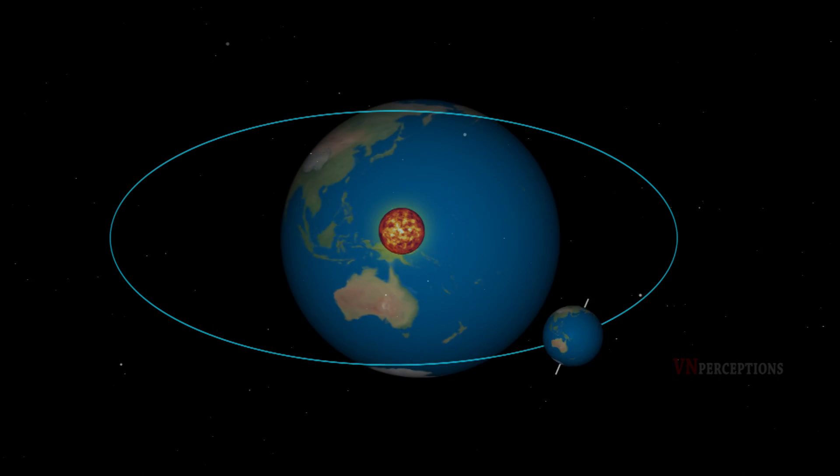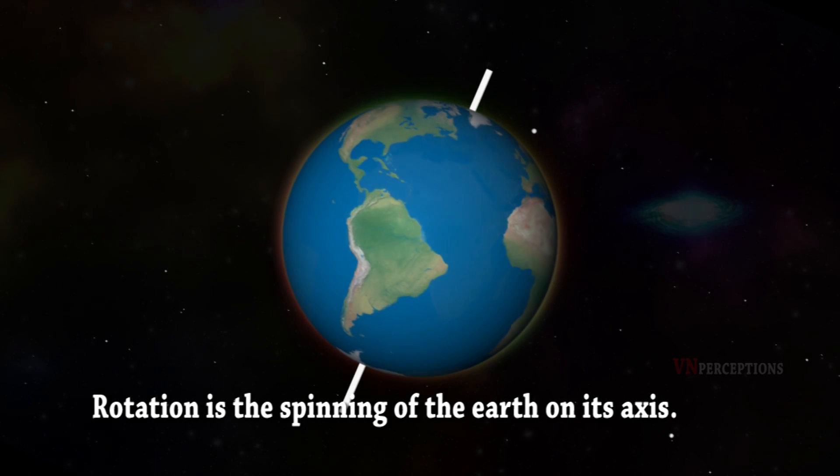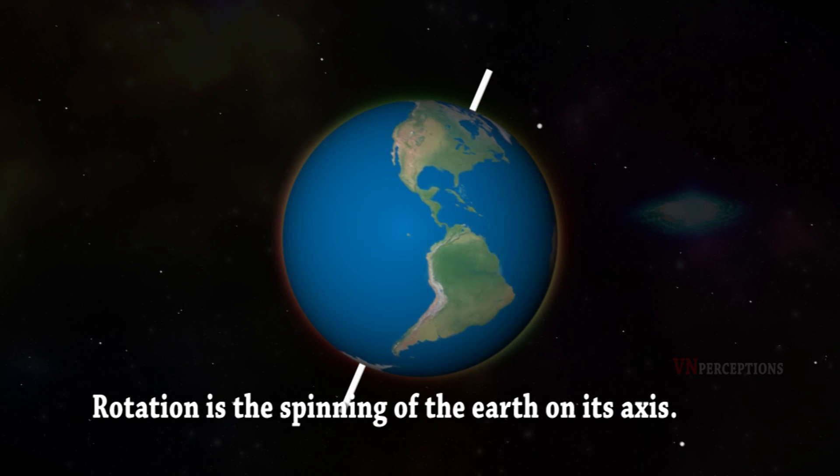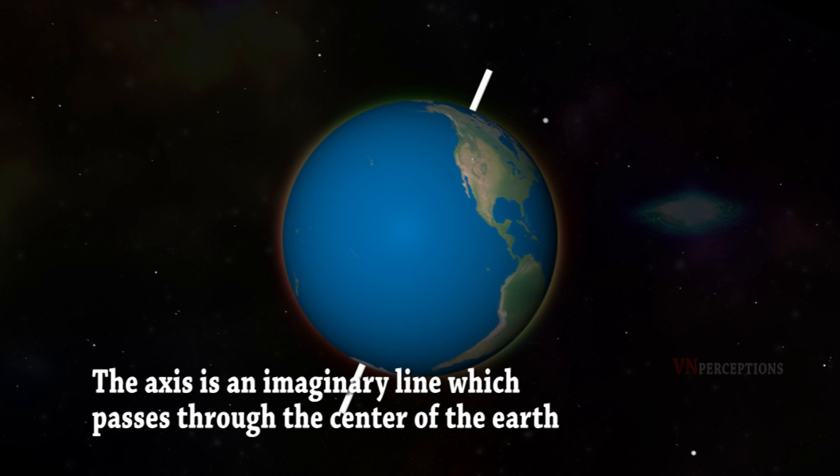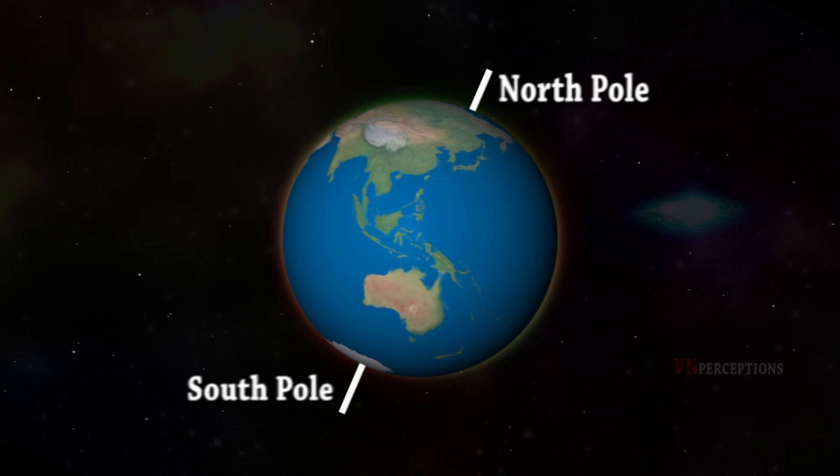What is rotation? Rotation is the spinning of the Earth on its axis. The axis is an imaginary line which passes through the center of the Earth connecting the North Pole and the South Pole.